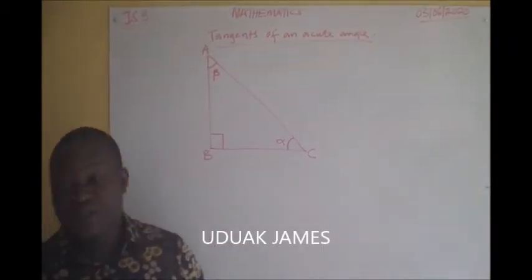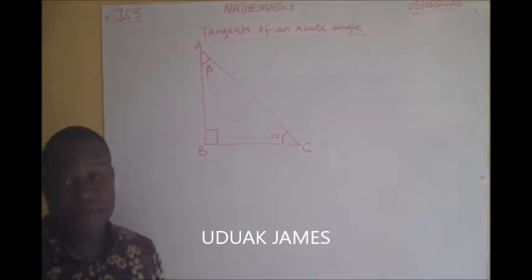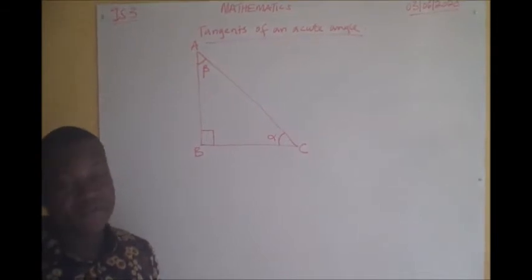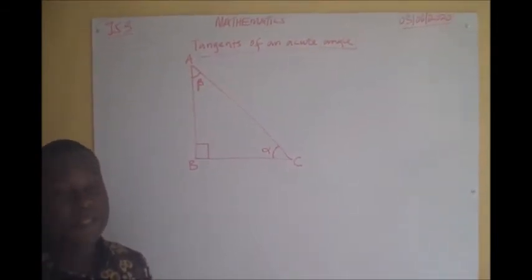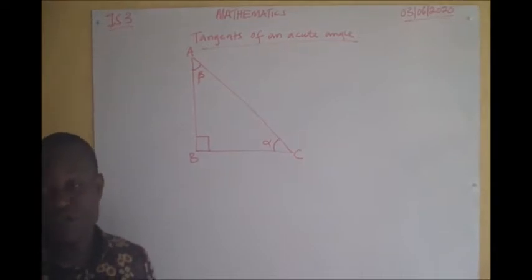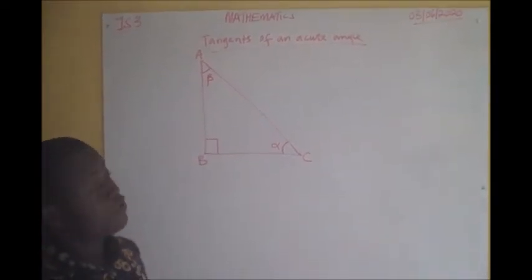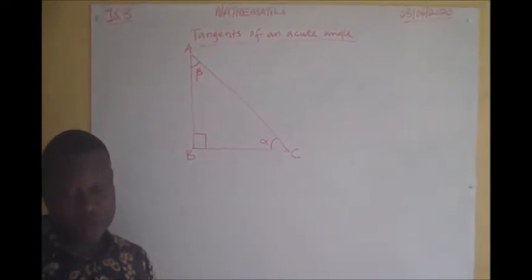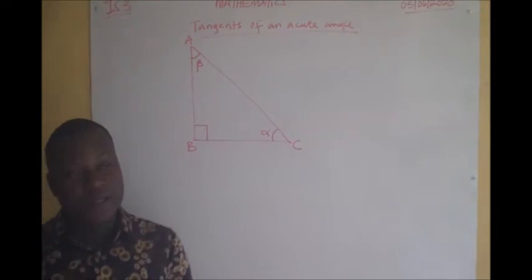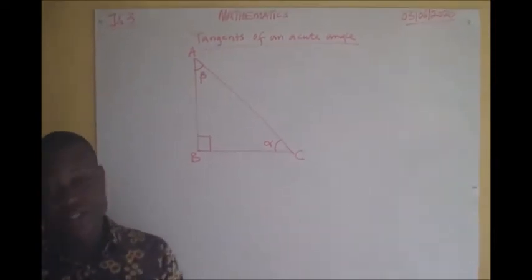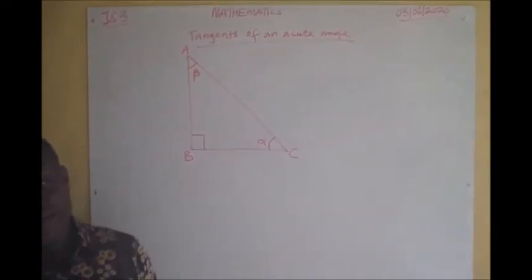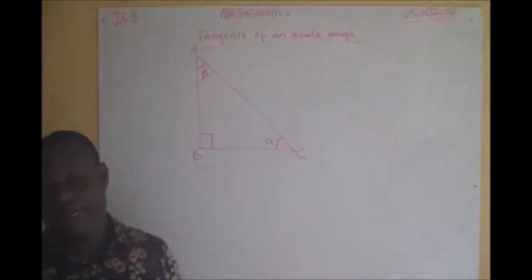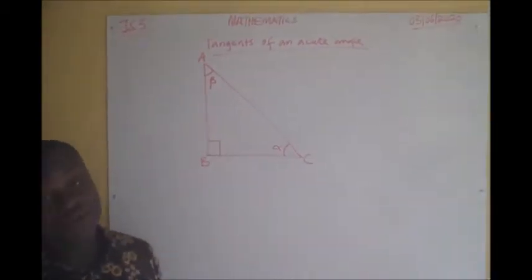Today we will be discussing the topic: tangent of an acute angle. You can recall that we defined certain terminologies associated with trigonometry ratios when dealing with cosine and sine, and we also defined one special angle during our teaching of some plane shapes. Today we want to look at the tangent of an angle — specifically an acute angle.